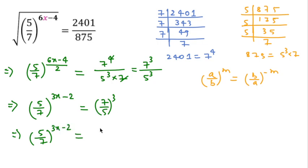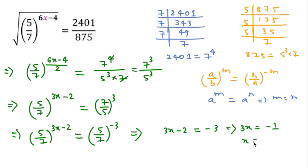Here we can see the bases are the same, so the powers must be equal. According to the exponent rule that if a^m = a^n then m = n, we can write 3x - 2 = -3. This means 3x = -1, so x = -1/3.